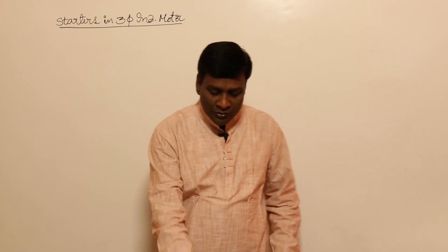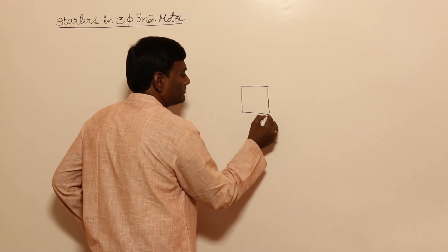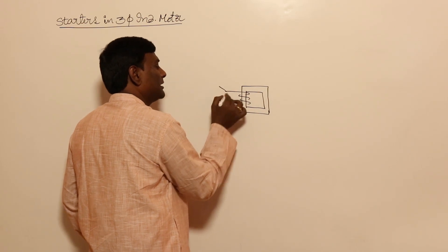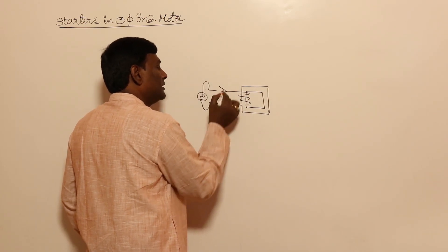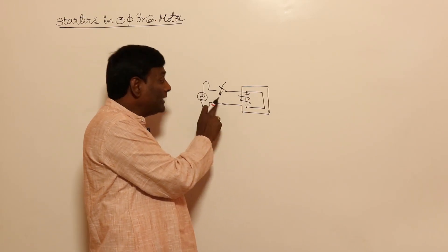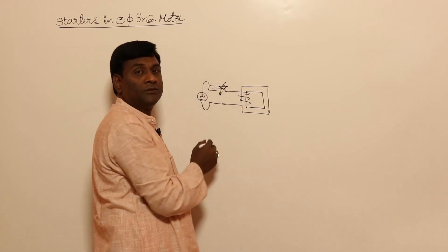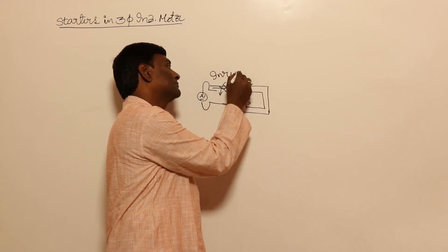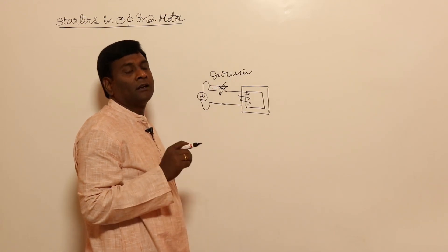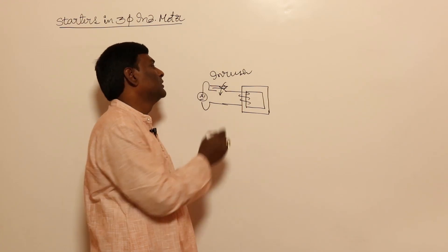Think of a transformer — its primary is like a motor. If I switch on the primary, it will absorb electrical power and huge currents will flow. We call these inrush currents. But we don't get problems from them because that huge current quickly settles, so no starter is needed for transformers.